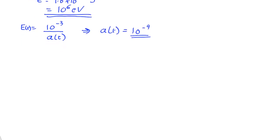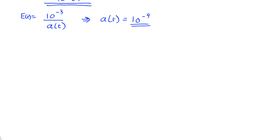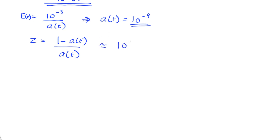What redshift does this correspond to? The redshift is equal to 1 minus the scale factor, divided by the scale factor. So that's 1 minus 10⁻⁹, which is essentially 1, over 10⁻⁹. So that gives us a redshift of 10⁹. A redshift of a billion is what we need to create electron-positron pairs.